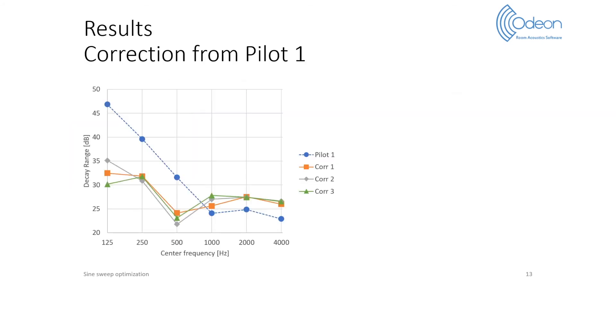This graph shows the resulting decay ranges for three corrected sweep measurements from the first pilot. The blue dashed line shows the decay ranges measured for the pilot. The corrected measurements lead to a flatter decay range at higher frequencies, around 26 dB.